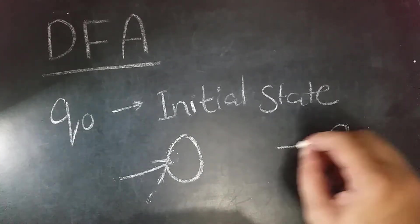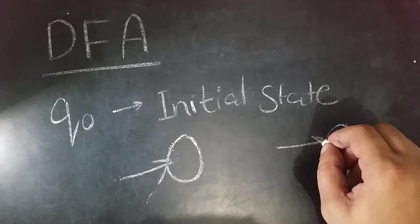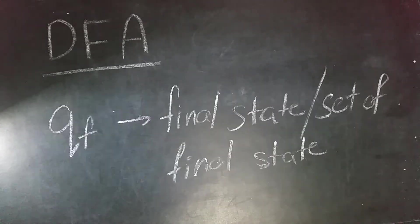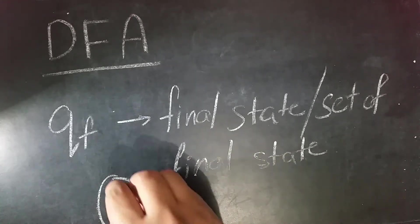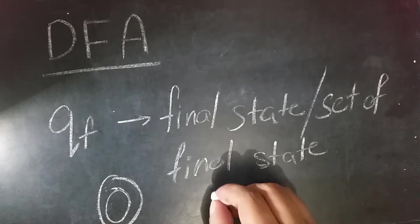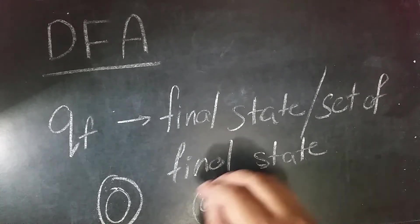the symbol of the state with an arrow pointing. The next is QF or simply capital F, which is the final state or set of final states. Since there can be more than one final state, it is denoted by two concentric circles in a transition diagram. In a transition table, it can be either Q with a